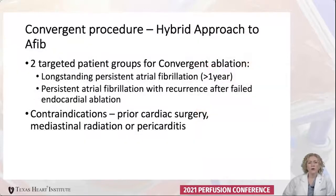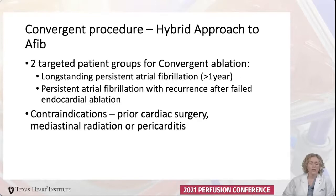There are two targeted patient groups for convergent ablation: those with long-standing persistent AFib for at least a year or more, and those with persistent AFib who have had recurrence after failed endocardial ablations. Contraindications include prior cardiac surgery, mediastinal radiation, or pericarditis, which could lead to adhesions or scarring that might make it difficult to safely access the left atrium for treatment.